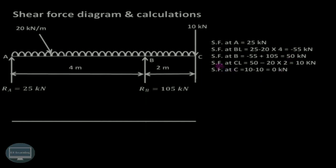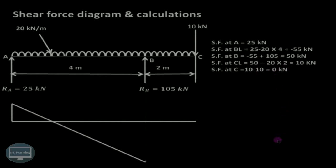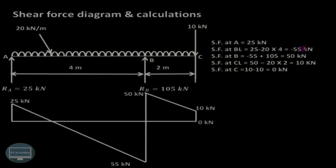Shear force just to the right of B is 50 kN. Then shear force just to the left of C — we consider the UDL from B to C, which is 20 multiplied by 2: so 50 minus 40 equals 10 kN. Exactly at C there is a downward acting point load, so it is negative: 10 minus 10 equals 0 kN.